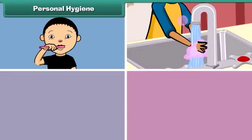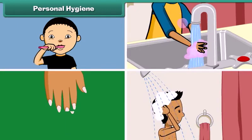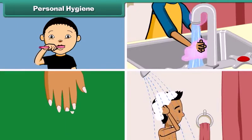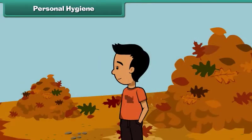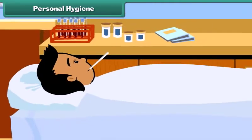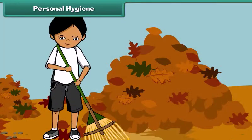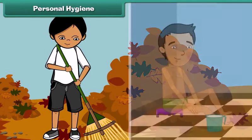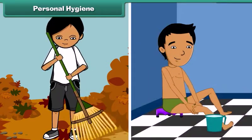Personal hygiene involves keeping one's teeth, hands, nails, hair, body, and clothes clean. That is not enough — a clean body in a dirty surrounding can still fall ill. So it is important that we keep our surroundings clean as well. Personal hygiene and cleanliness of surroundings go hand in hand.